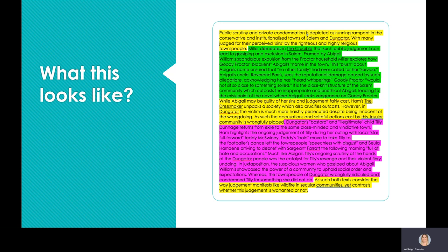You then need to finish off the paragraph by coming back to the key idea, which was: as such, both texts consider the way judgment manifests like wildfire in secular communities, yet contrast whether this judgment is warranted or not. I know that that can be a little bit complex by doing similarity and difference, but it's really important if you want to end up in that high range bracket that you stop and that you don't keep saying that both texts are the same, that you look at similarity and difference and that you start to balance out your paragraph. By balance I mean that you have evidence and explanation for the crucible, evidence and explanation for the dressmaker, and a whole heap of comparison.